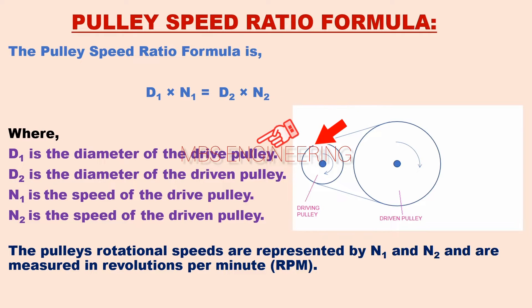Where D1 is the diameter of the driving pulley in mm, D2 is the diameter of the driven pulley in mm, N1 is the speed of the driving pulley, and N2 is the speed of the driven pulley. The pulley's rotational speeds, N1 and N2, are measured in revolutions per minute (RPM).